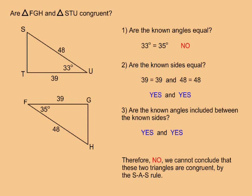In this example, are triangle FGH and triangle STU congruent? Question 1: are the known angles equal? No, one triangle has a 33 degree angle and the other has a 35 degree angle. Question 2: are the known sides equal? Yes, both triangles have 39 unit sides and both triangles have 48 unit sides. Question 3: are the known angles included between the known sides? In both cases, yes, the known angles are included between the known sides. But because the known angles are not equal, no, we cannot conclude that these two triangles are congruent by the SAS rule.